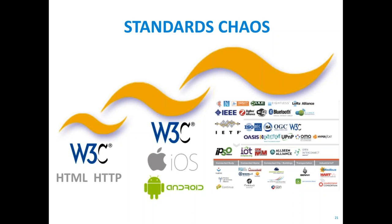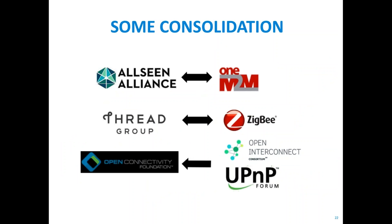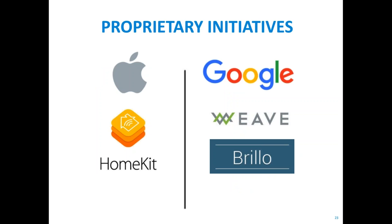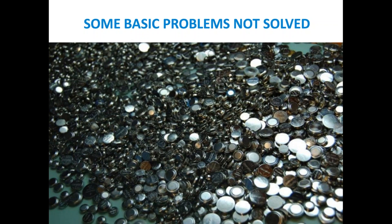We've seen some consolidation — the AllSeen Alliance, ZigBee Alliance working with the Thread Group, OIC and UPnP Forum becoming the Open Connectivity Foundation — but this is not enough. We'd need those 50 standards to come down to just two or three, and we're still very far away; it could take another five to ten years. On top of that, we've seen proprietary initiatives from Apple and Google with HomeKit, Weave, and Brillo — there is a very real risk we may never get to a truly open standard.